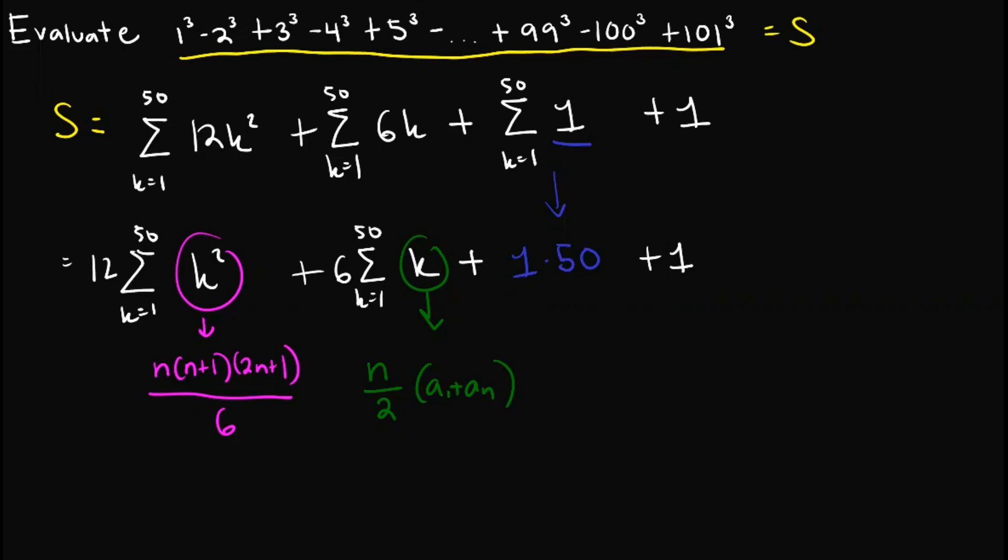So applying this would actually give us 12 times n, the n here is 50. So 50 times 50+1 is 51 times, in here applying 50 here would give us 101 all over 6, plus 6 times 50 over 2 times a₁ is 1 plus aₙ or the last term is 50 plus 50.